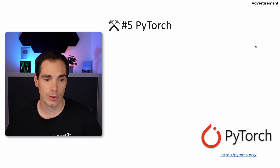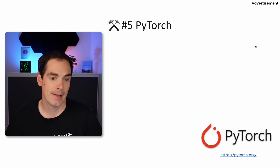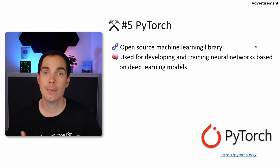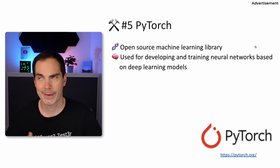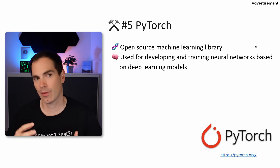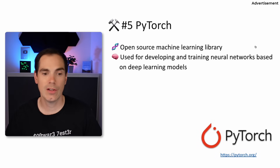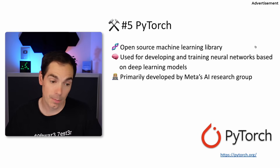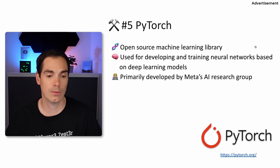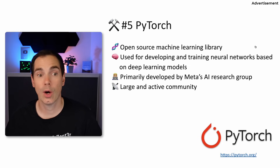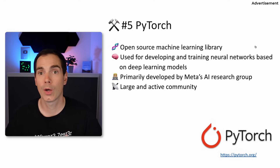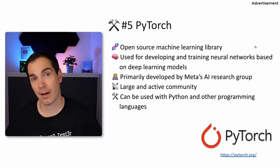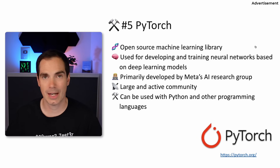The next tool is PyTorch — an open source machine learning library used for developing and training neural networks based on deep learning models. It's for highly technical topics related to machine learning. It's primarily developed by Meta's AI research group and has a large, active community. It can be used with Python and other programming languages, though as the name suggests, Python is the way to go.